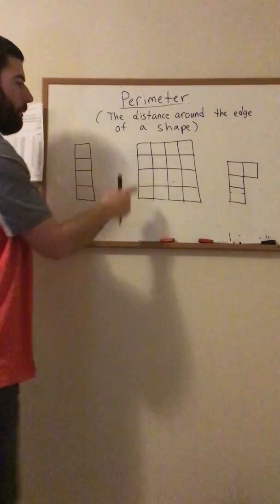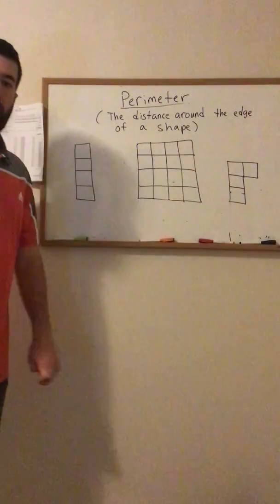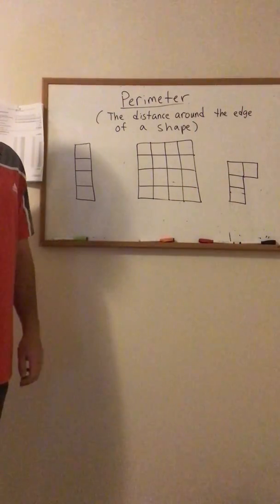So I have three examples here and we're going to find the perimeter. I'm going to show you how to count unit squares and find the perimeter.